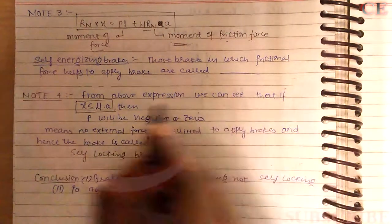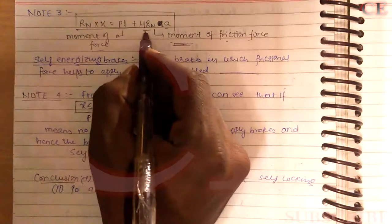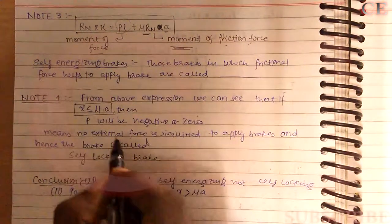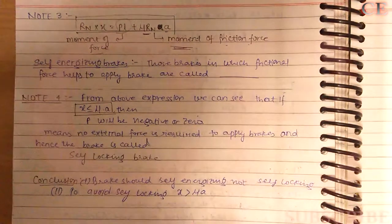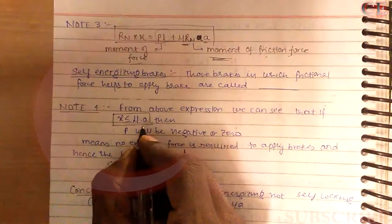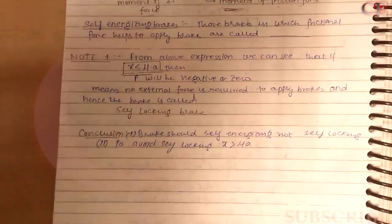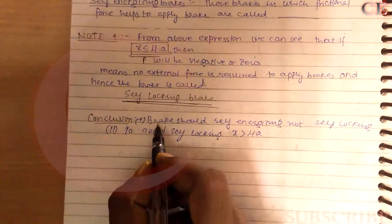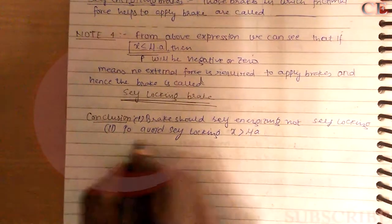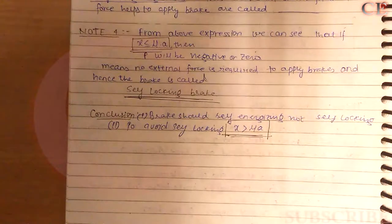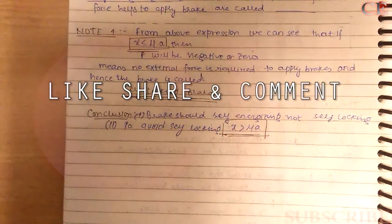From the expression, if x is less than mu times a, then P becomes negative, meaning no external force is required to apply the brakes — the vehicle will automatically come to rest. This kind of braking system is called a self-locking brake. The conclusion is: the brake should be self-energizing, not self-locking. To avoid self-locking, the condition x greater than mu times a must be satisfied.